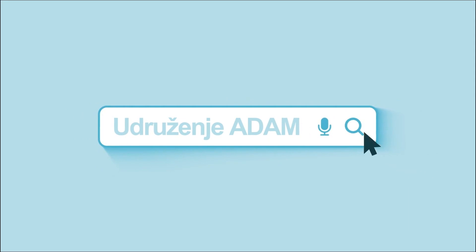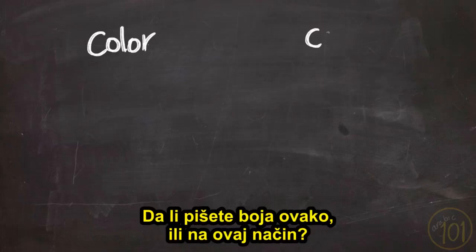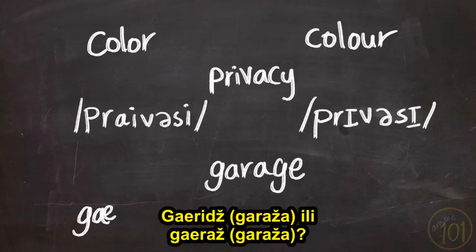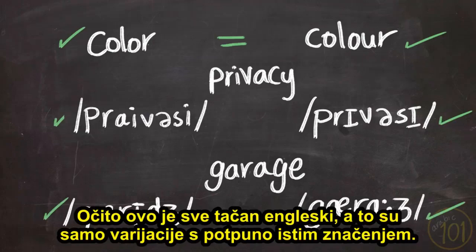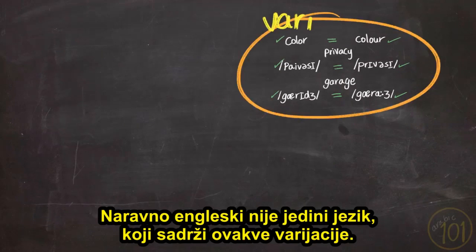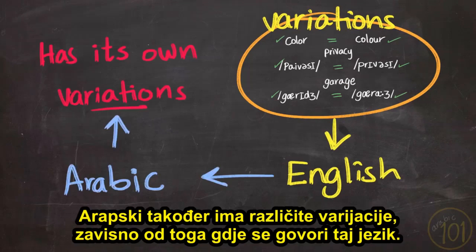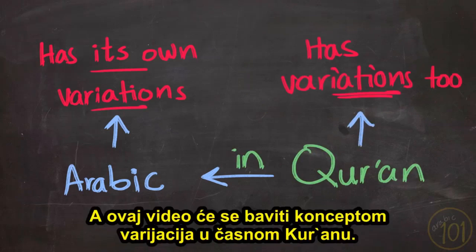Do you write 'color' like this or like that? Do you say 'privacy' or 'privacy,' 'garage' or 'garage'? Obviously this is all correct English — these are just variations with the exact same meaning. English is naturally not the only language that contains variations like these. Arabic as well has different variations depending on where the language is spoken. Since the Holy Quran was revealed in Arabic, it too had variations within.